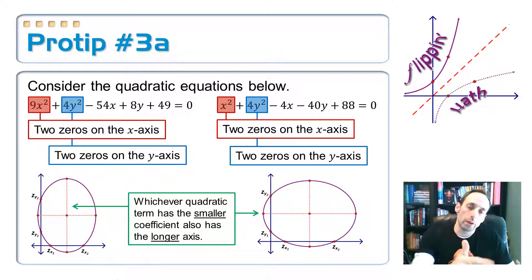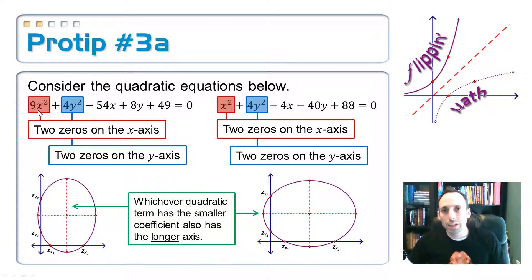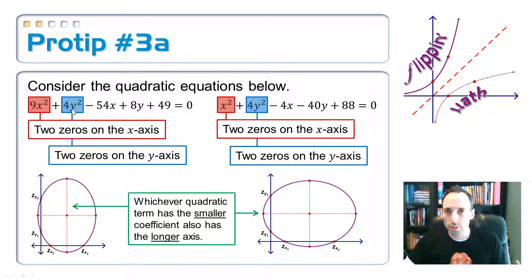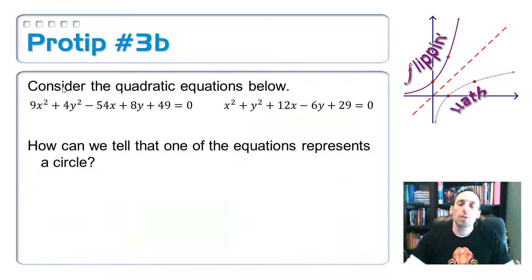You'll see why this has to be the case when we put these into standard form. Also, in terms of SRT transformations, the x is not actually scaled by 9 — it's scaled by the reciprocal, one-ninth. And the y-squared is not scaled by 4, it's actually scaled by one-fourth. That's another reason why the smaller coefficient gives the longer axis.